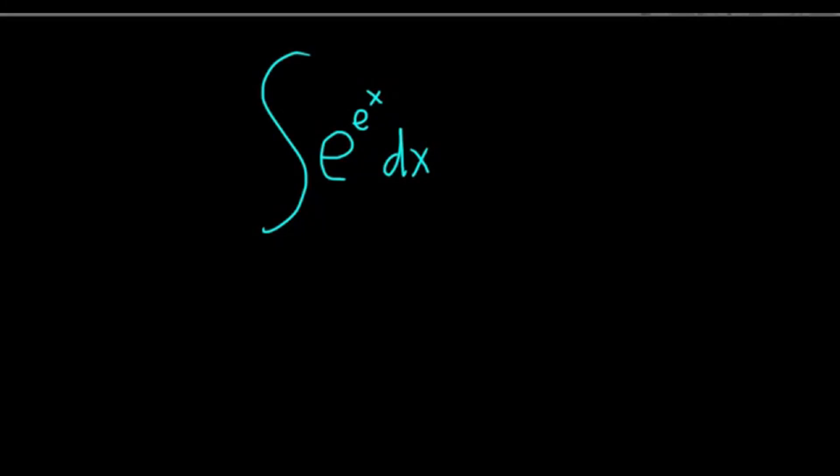Let's try to integrate e to the e to the x. We'll start by writing down the Maclaurin series for e to the x. Recall, if you have e to the x, this is equal to the infinite sum as n runs from 0 to infinity of x to the n over n factorial.